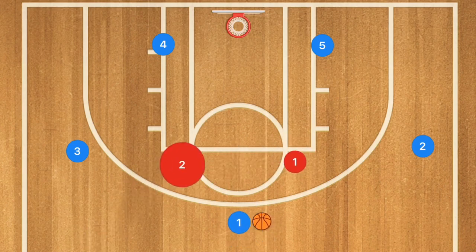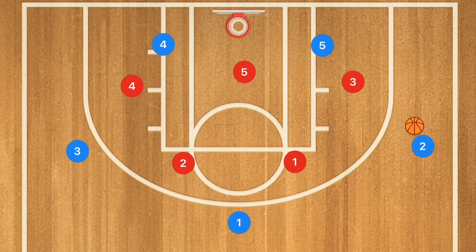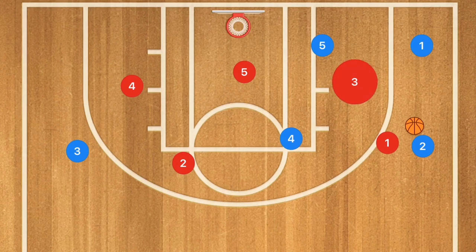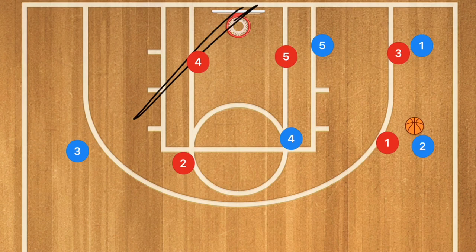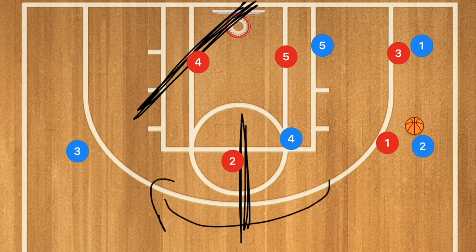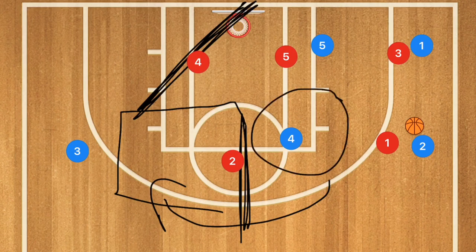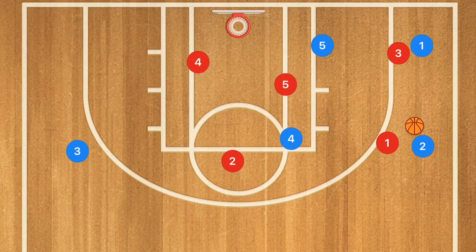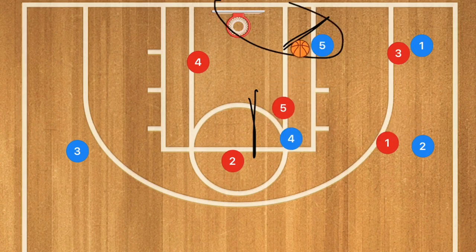In the overload setup against a two-three zone, we now have players one, three, and five overloaded on one side. Player four cuts off any lob passes, and player two guards the edge of his zone along the three-point line. Generally, player four will be open, or the defender guarding between players four and five gets confused, allowing quick high-low passes — which is why the overload is so deadly against zone defense. This works against the three-two zone as well.